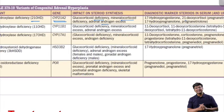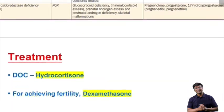To diagnose 21-hydroxylase deficiency, you measure the levels of 17-hydroxy progesterone and 21-deoxycortisol — tested in both serum and urine.